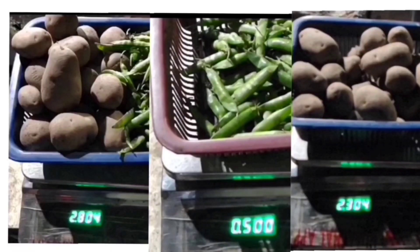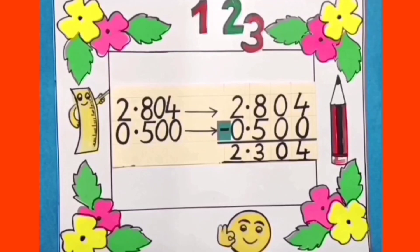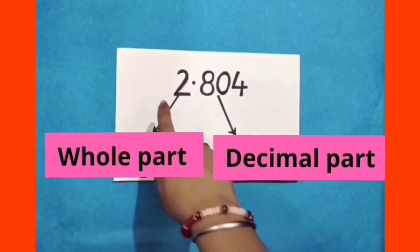Both the vegetables when weighed together were 2.804 kilograms. When we subtract the weight of peas, that is 0.500 kilogram, from the weight of total vegetables, we are left with 2.304 kilograms of potatoes. So after subtracting 0.500 from 2.804, we get 2.304, and in mathematical form it can be represented like this.